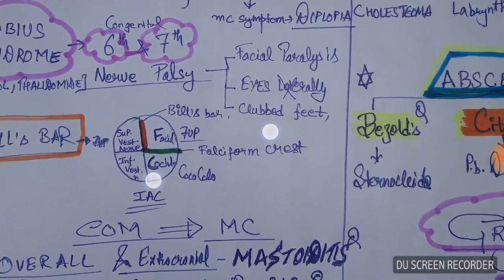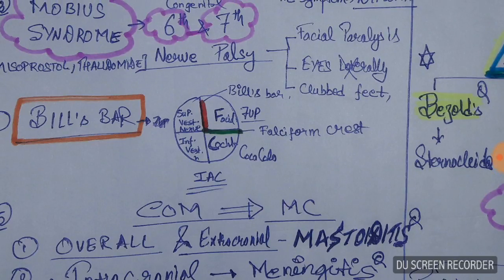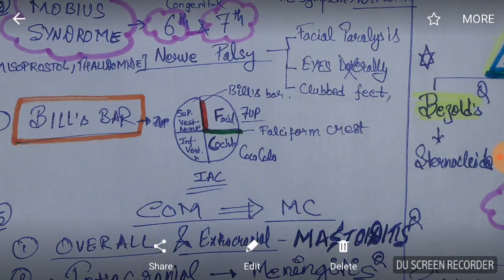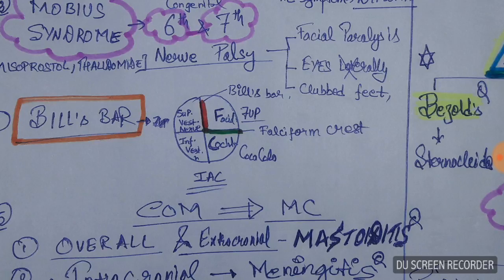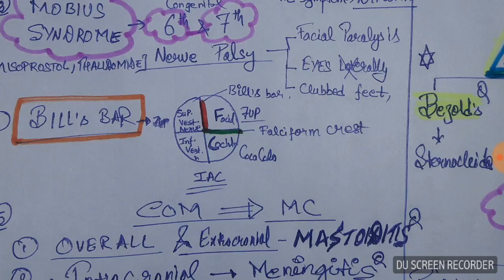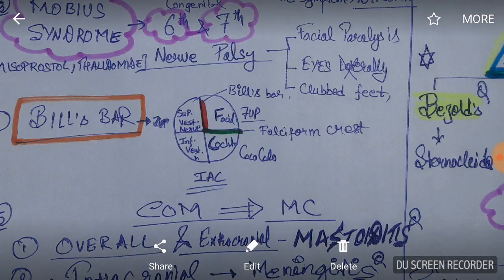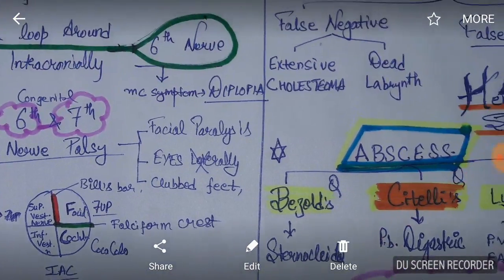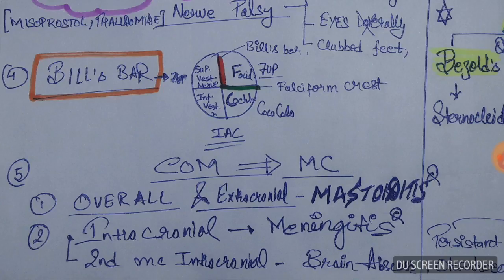Bill's bar is an anatomical vertical separation between the facial nerve and the superior vestibular nerve within the internal acoustic canal. A useful mnemonic is 'Seven Up and Coca-Cola' — the facial nerve (CN7) lies above, and the cochlear nerve lies below, separated by the falciform crest. On the other side, the superior vestibular nerve is superior and the inferior vestibular nerve is inferior.